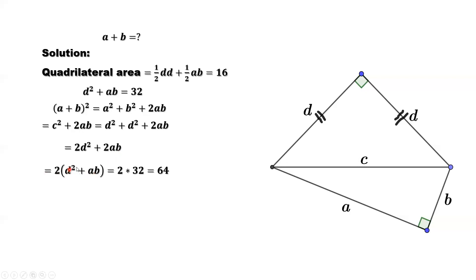What is d² + ab? d² + ab is 32. Replace this part by 32. We have 64.